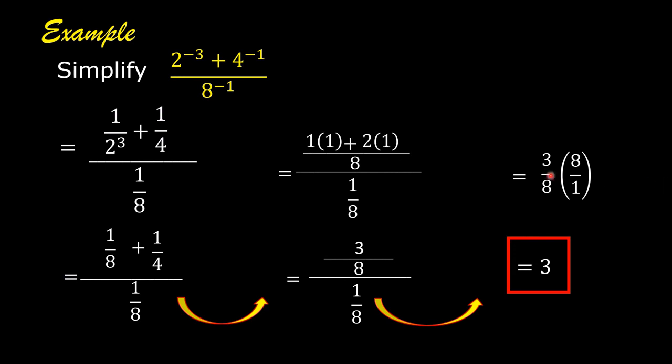Or, you can multiply 3 by 8. 3 times 8 is 24. Then, 24 divided by 8 is equal to 3.